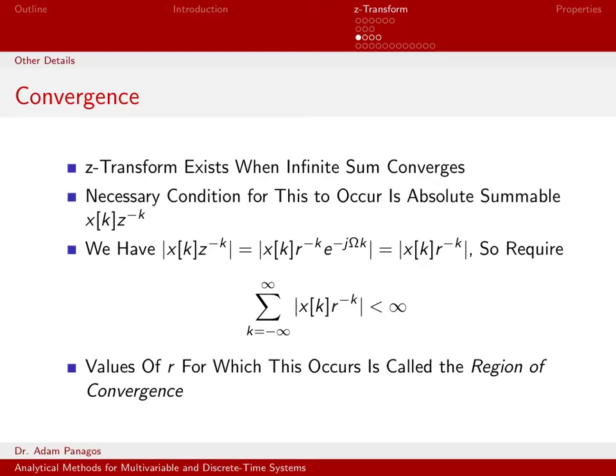So we need to spend a minute talking about convergence of the z-transform. The definition of the z-transform is the sum from k equals minus infinity to infinity of x of k times z to the negative k.